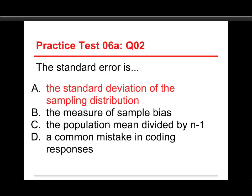Now, there are measures of sample bias, but they're not called the standard error. And we won't cover them in this course. That comes up in what's called psychometrics. C, the population mean divided by n minus 1? That's just something I made up. It feels a little bit like the formula for the standard deviation, but that's not it. And then D, a common mistake in coding responses. Well, that would be a standard error of kinds, but no, that's just something I made up.